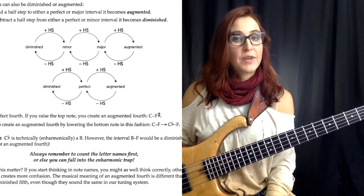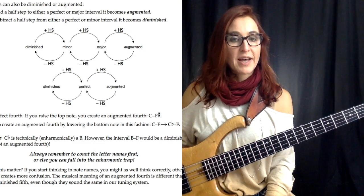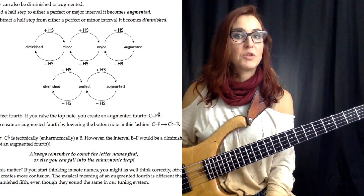One more thing. Intervals that are minor — make them bigger by a half step, they become major. Intervals that are major — make them smaller by a half step, they become minor. Intervals that are perfect — make them bigger by a half step, they become augmented. Intervals that are perfect — make them smaller by a half step, they become diminished.